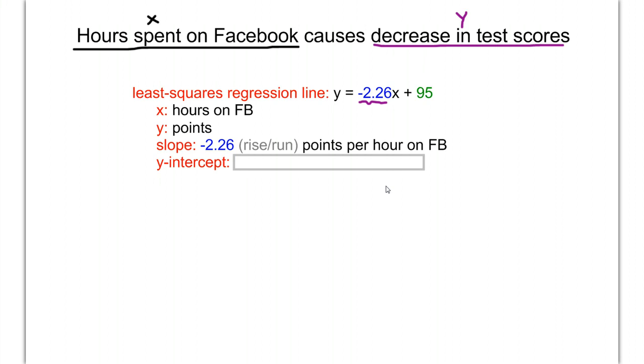Sometimes these units don't make much sense by themselves, but that's okay. When solving problems, the units will work out exactly as they should if you do it correctly. The slope is negative 2.26 points per hour on Facebook. You could interpret this: you lose 2.26 points every hour you spend on Facebook.